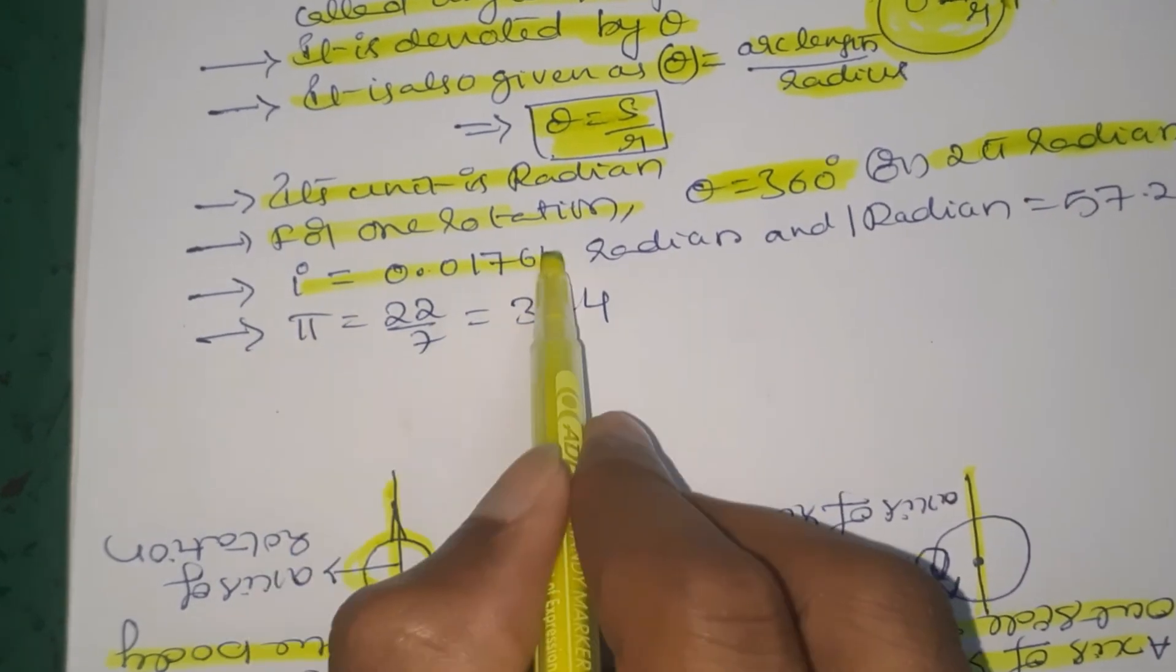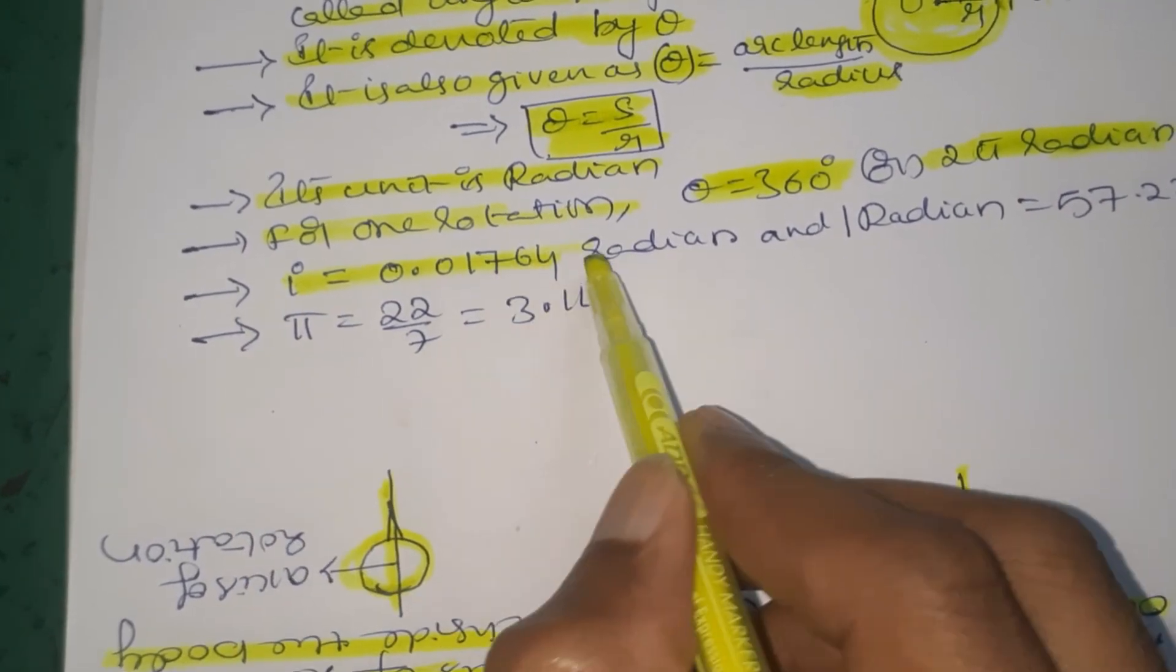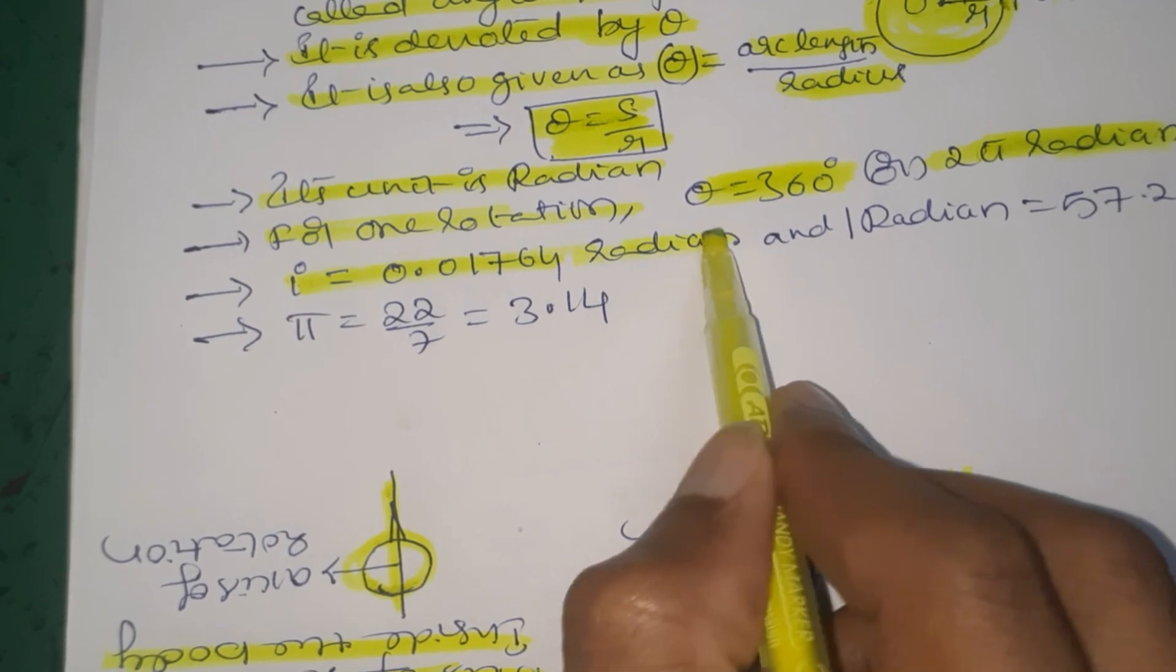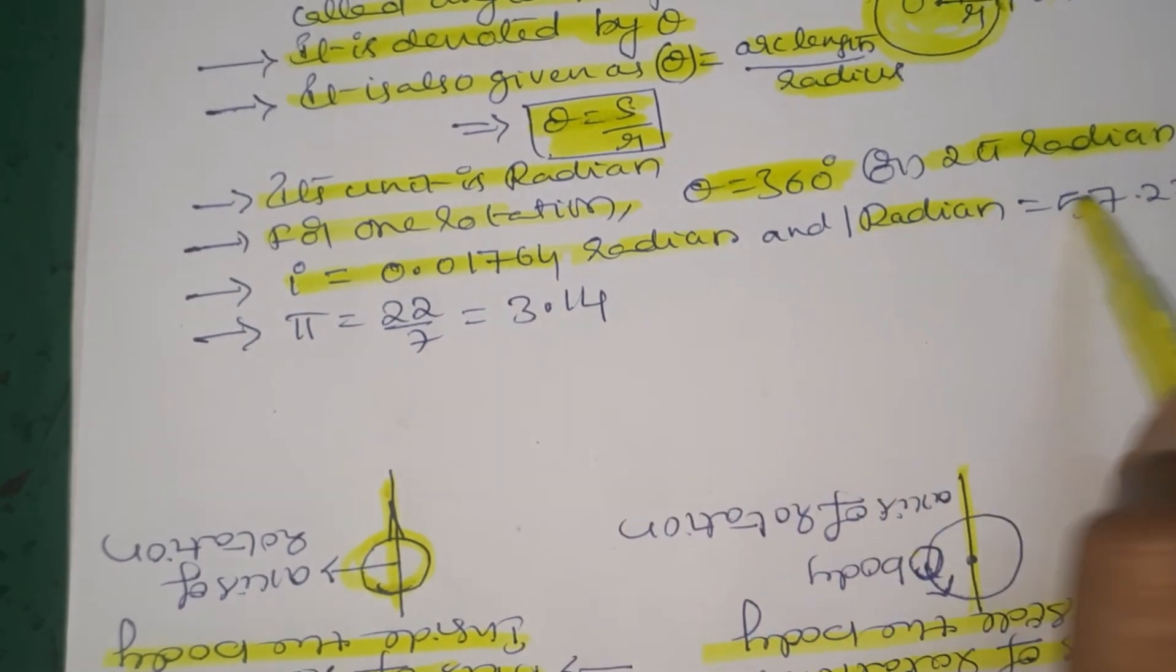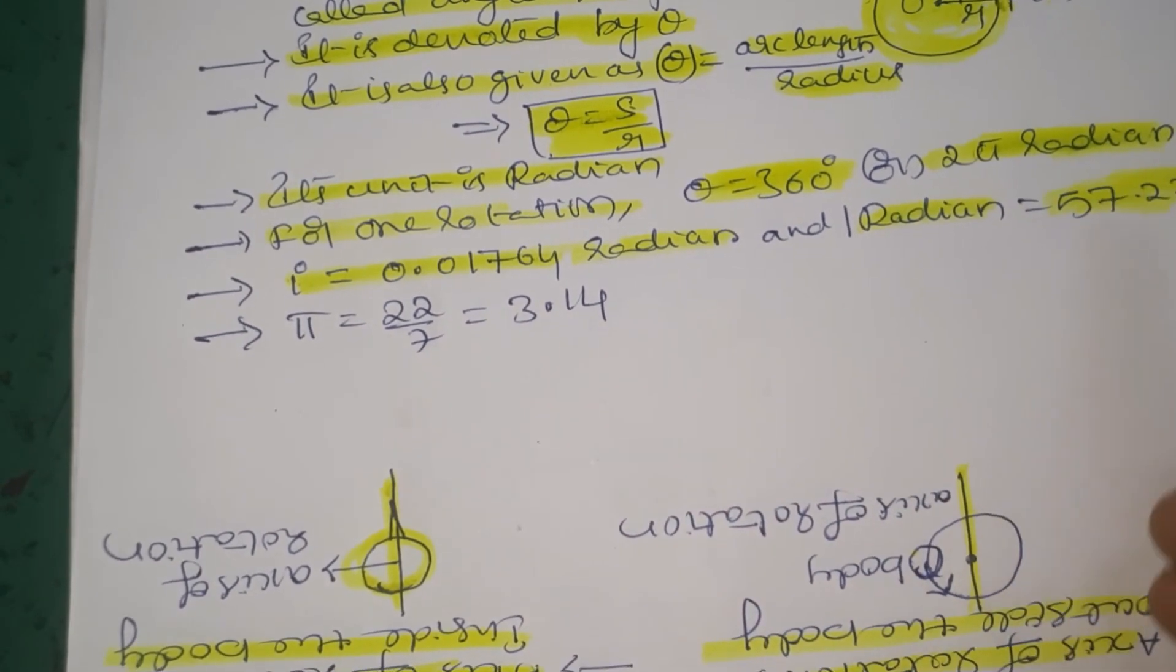One degree equals 0.01764 radians, and one radian equals 57.27 degrees.